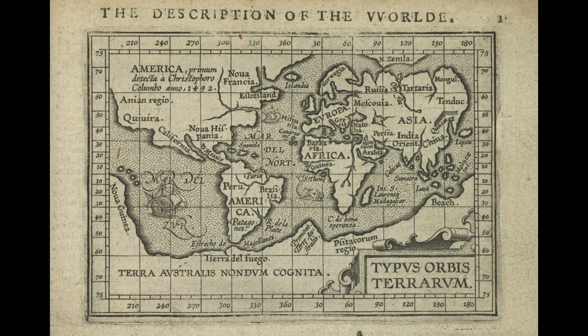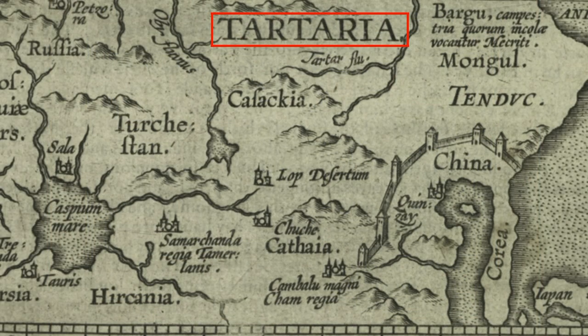Of course, we're already familiar with Asia and Indonesia. But where was Tartaria? It's been scrubbed from modern maps, but this Ortelius map from 1603 shows Tartaria located in Asia, northwest of China and west of Mongolia, east of Russia and northeast of Turkestan.